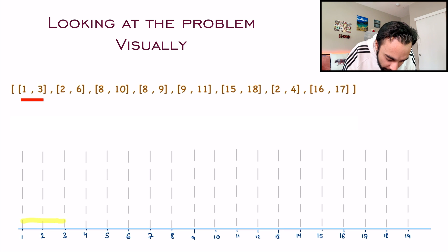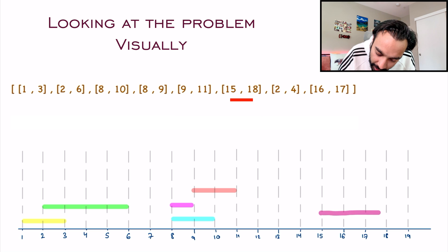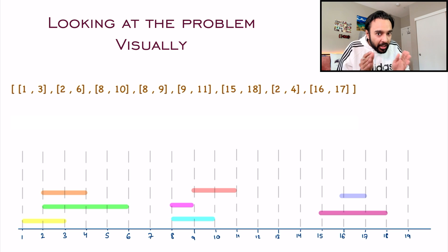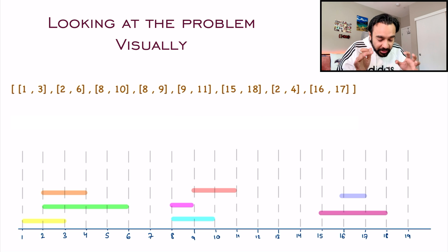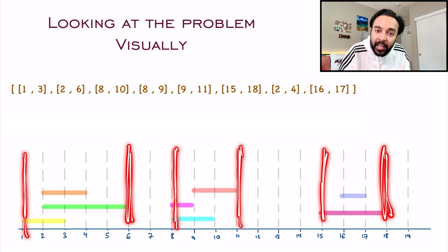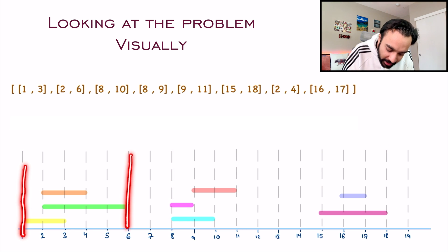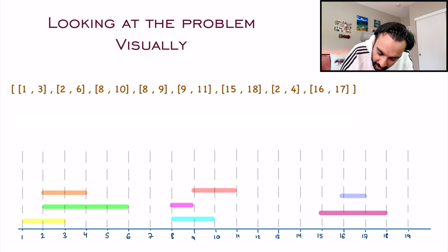My first interval is between 1 and 3. My next interval is between 2 and 6. My third interval is between 8 and 10. The next interval is between 8 and 9. Moving ahead, I have an interval between 9 and 11. Then I arrive at 15 and 18. Then we have 2,4. And the last interval is 16,17. This is how your intervals look visually. And if you notice this diagram closely, you have already arrived at the answer. These are your three intervals that should be in your output array — one interval will be 1,6, the other will be 8,11, and the third will be 15,18.